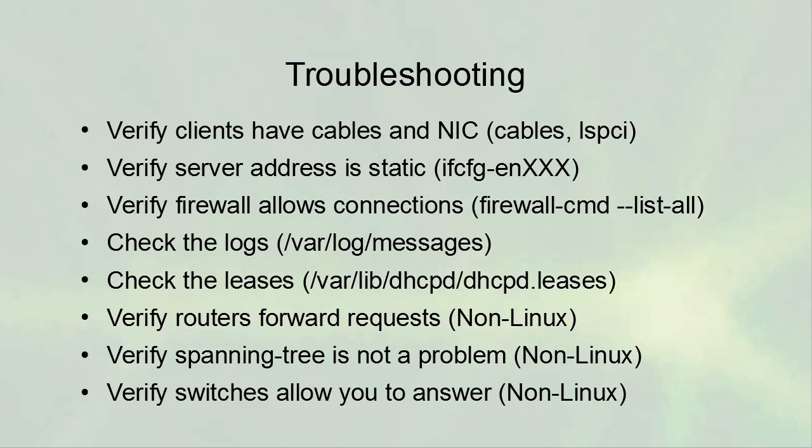If you are setting up a network with multiple subnet sections in your configuration, you may be servicing different subnets based on forwarded requests — so verify the routers are forwarding those requests. Also verify that spanning tree is not causing problems. Sometimes spanning tree is configured so that a newly booting machine is assumed to be a switch, causing the port to block all traffic until it determines the machine is not a switch — so make sure spanning tree is not blocking communication.